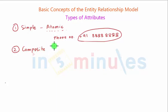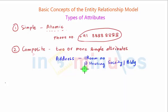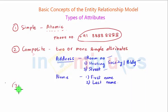The second type is composite attributes. In composite attributes, we have two or more simple attributes. So let us take the example of address. The address of a person can be broken down into room number, housing society or building, and street. So we can see that we have used three simple attributes, each atomic in nature, to form this composite attribute called address. Another example could be name, where we have first name and last name. So clearly, a composite attribute is an attribute which is composed of two or more simple attributes.